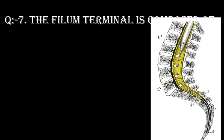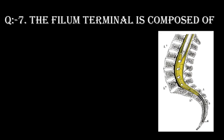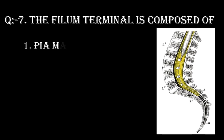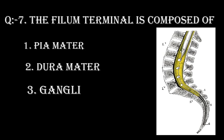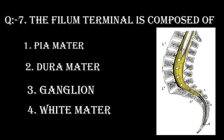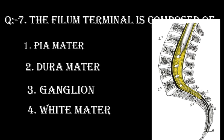Question number 7. The filum terminale is composed of. Option 1: Pia mater. Option 2: Dura mater. Option 3: Ganglion. Option 4: White matter.